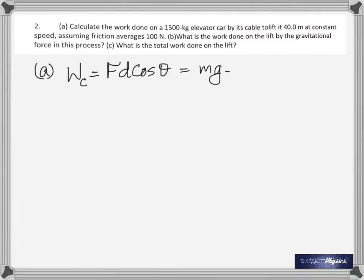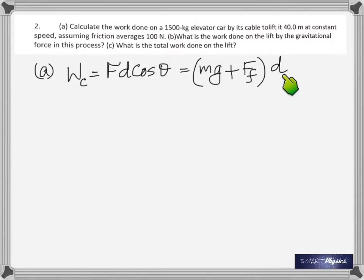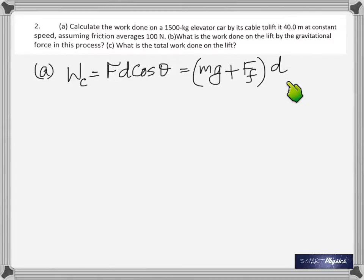Writing W = Fd·cosθ, and doing both forces together: instead of h, it's d — that's the only difference. W = mgd plus friction times d. That makes sense: mg times d is the potential energy work done, and work done against friction is the frictional force multiplied by d.